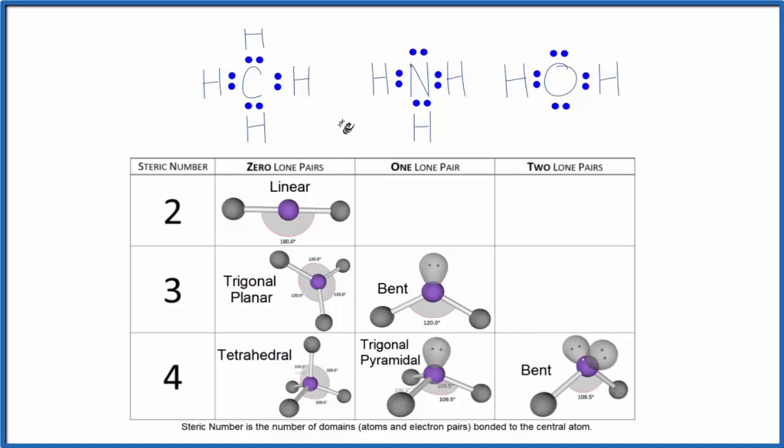Note that the electron geometry - these are the electron domains - they all have four things around them. We consider their electron geometry for all of them to be tetrahedral. They do have different molecular geometries, though.